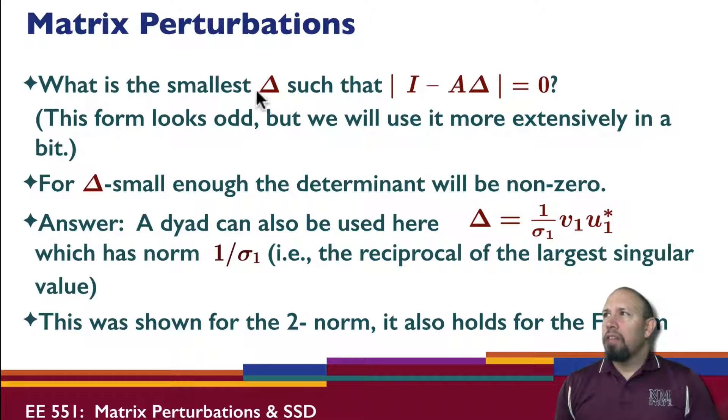Also, we could look at it from the multiplicative uncertainty. What is the smallest delta such that this determinant is zero? We saw this already. If delta again is small enough, the determinant will be non-zero. We saw that a dyad can also be used here of this form. This has norm one over sigma one. Again, this was shown for the two-norm. It also holds for the Frobenius norm.